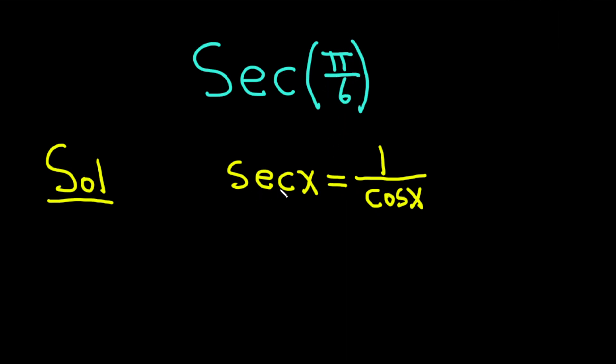So, instead of secant of x, we have secant of pi over 6. And this is equal to 1 over the cosine of pi over 6.